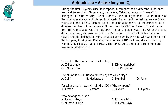Welcome to Aptitude Lab. This puzzle says that during the first 10 years since its inception, a company had 4 different CEOs, each from a different IIM — Ahmedabad, Bangalore, Calcutta, and Lucknow. These CEOs belong to different cities, they are from different IIMs.